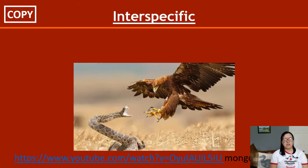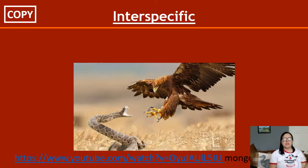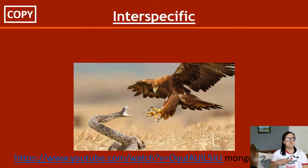Interspecific competition is competition that occurs between members of different species — two or more members of different species. For example, this eagle and this snake are both competing for, let's say, a dead rabbit on the ground. This can happen for things like water and food sources. The most common one I see in David Attenborough films is lions that have just killed a buffalo, and hyenas try to compete for the carcass and chase the lions off.